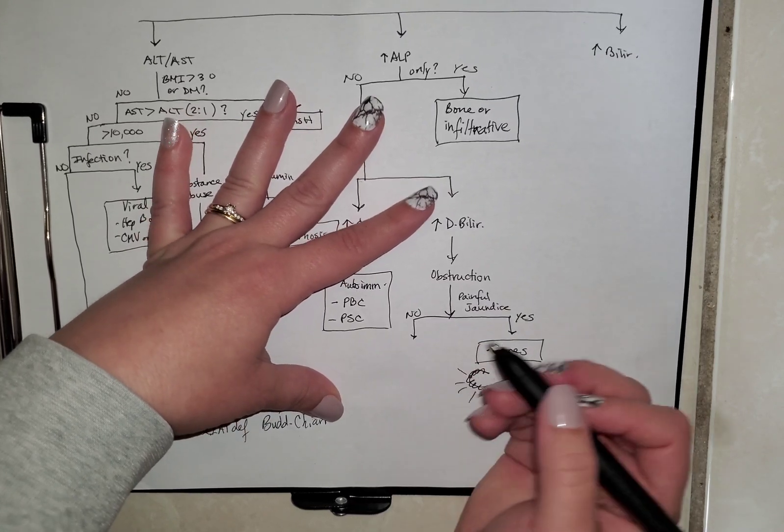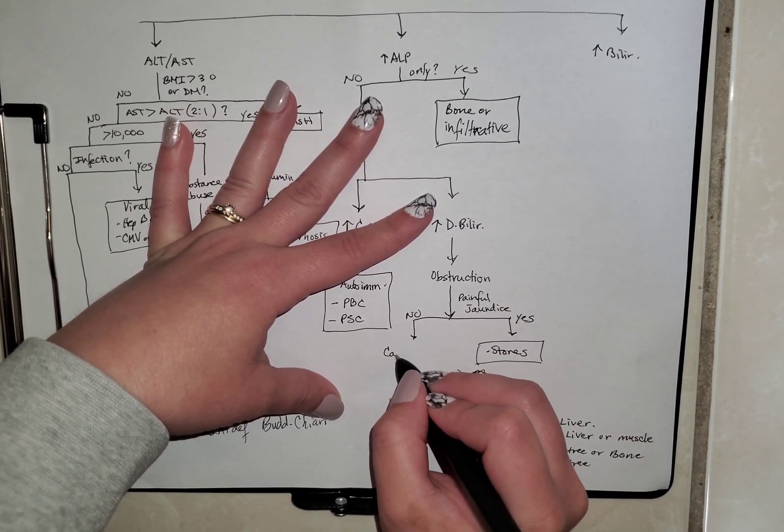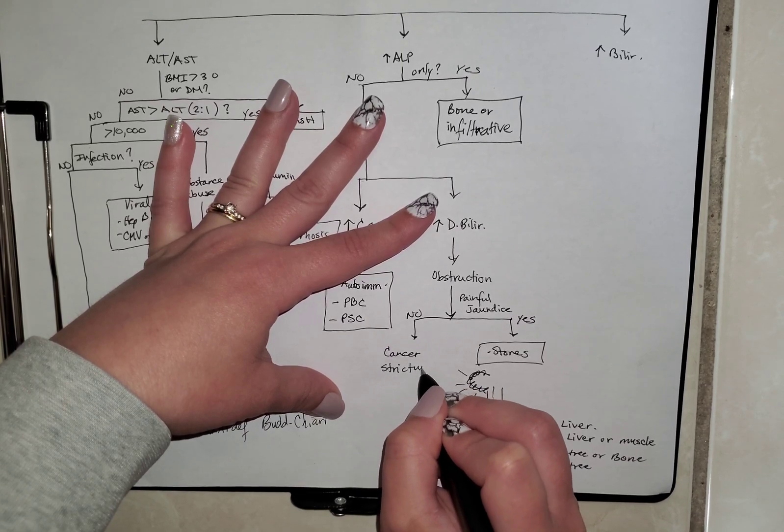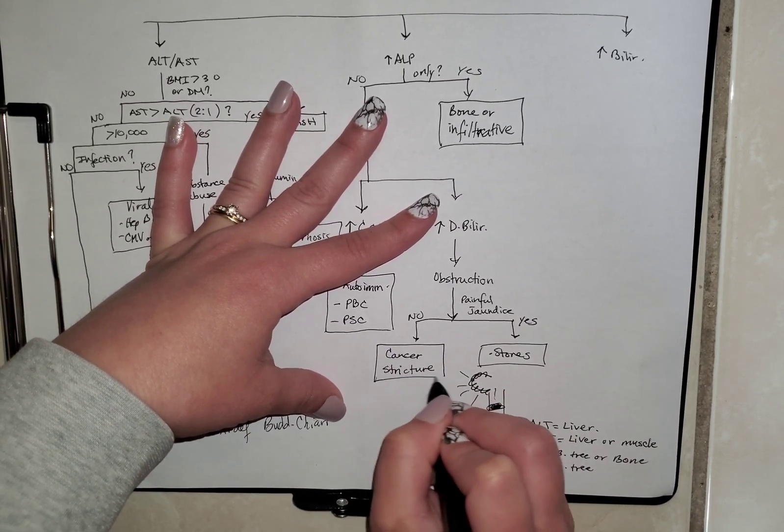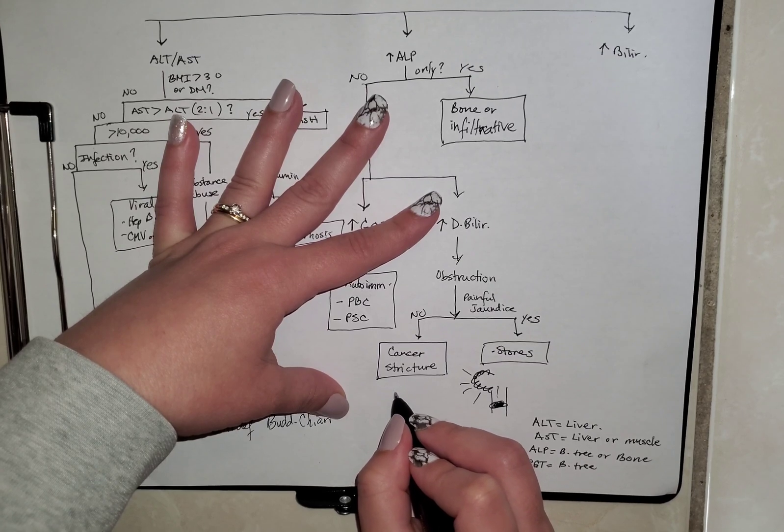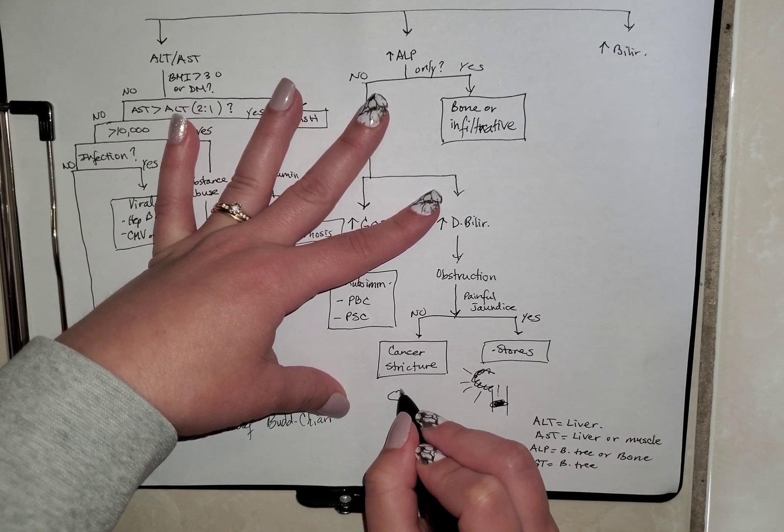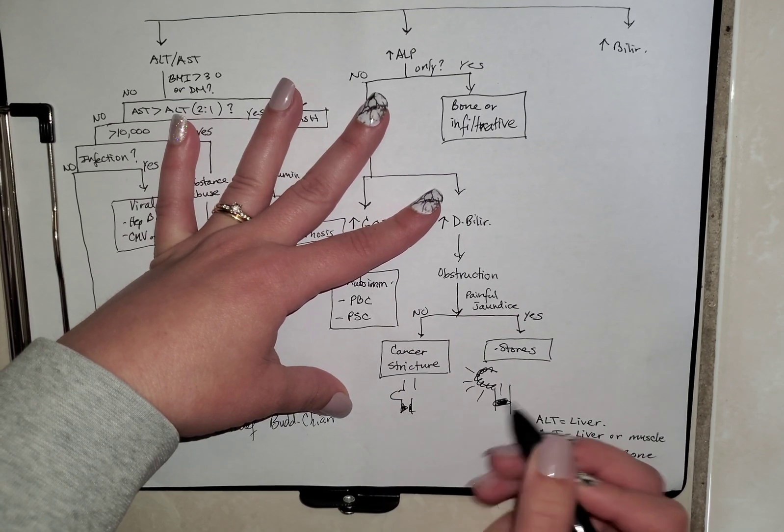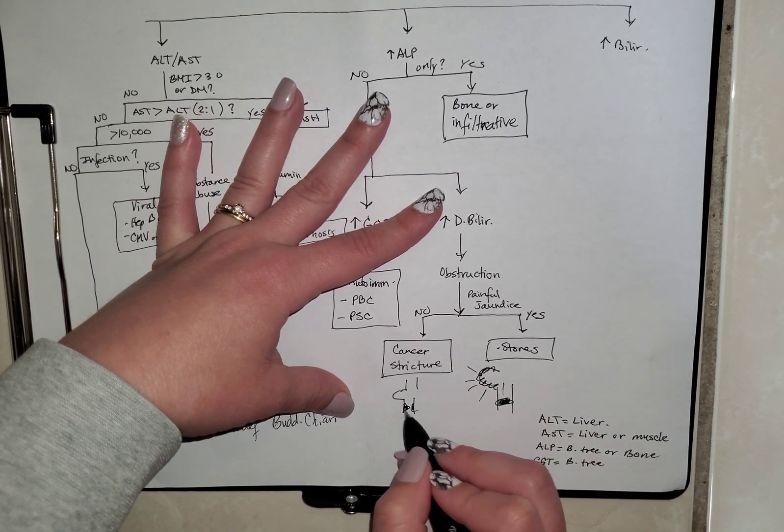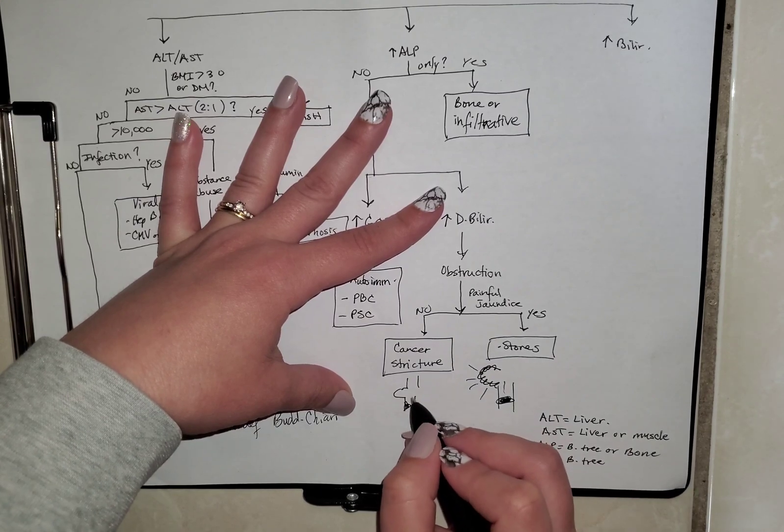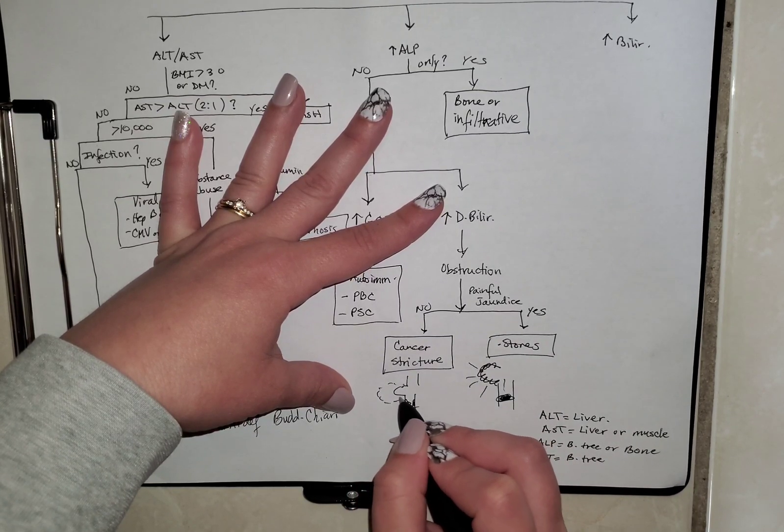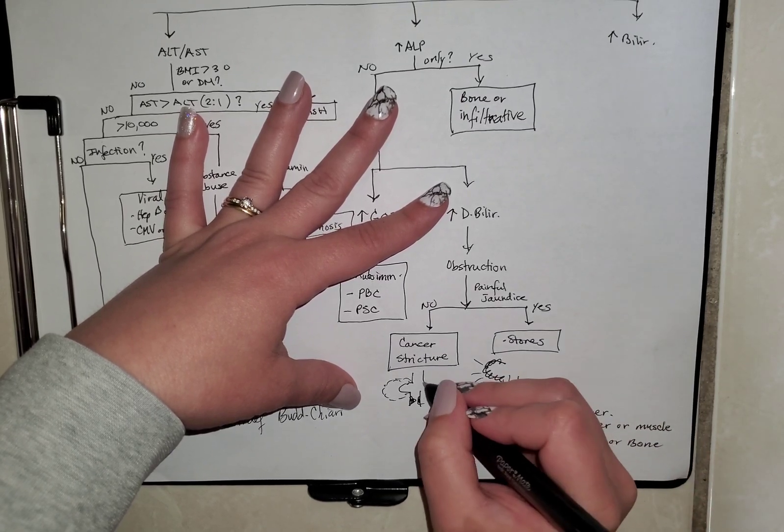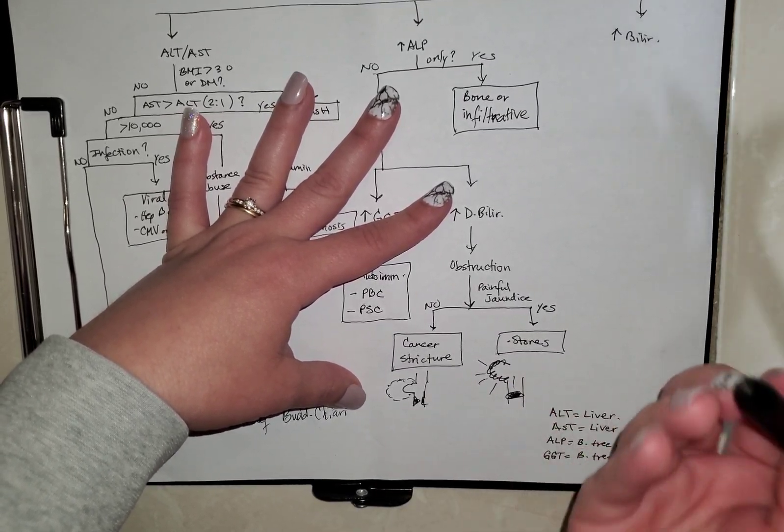Now, if you don't have painful jaundice, then we're looking at something more like cancer or stricture. And what happens here is the blockage is not completely blocking the common duct. So we have a little bit of space to leave because the mass is growing or the stricture is ongoing. And when it goes up, it just dilates the gallbladder. But some of it is still going down. So this is not exactly painful yet.